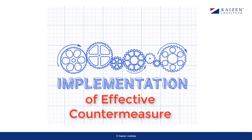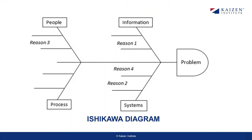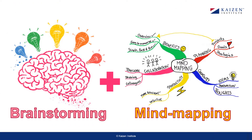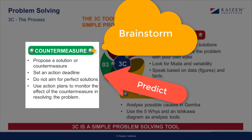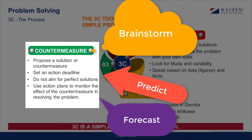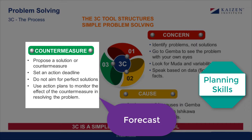The Ishikawa or the Fishbone diagram identifies many possible causes for a problem. The Ishikawa diagram combines brainstorming with mind mapping and lets you consider all possible causes of a problem rather than the most obvious reason. Countermeasure refers to proposing and selecting a solution. You have to brainstorm, predict, forecast and use project planning skills to set up a realistic deadline.